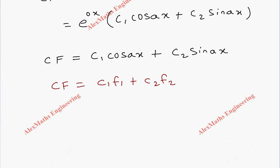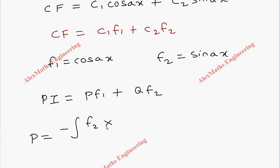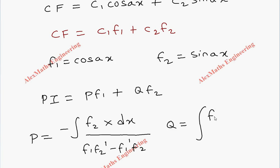Let's compare this with the general form of complementary function, which is c1·f1 plus c2·f2. By comparison we get f1 equal to cos(ax) and f2 equal to sin(ax). Now the particular integral formula is P·f1 plus Q·f2. For finding P we use minus integral of f2 into X dx, whole divided by f1·f2' minus f1'·f2.